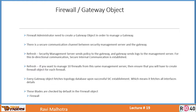Let us start. So the Firewall or the Gateway object. A firewall administrator needs to create a Gateway object in order to manage a Gateway. That's simple theory. In Checkpoint, before you can manage a Gateway, you need to create a Gateway object with the IP address, and once you create it, you need to establish SIC using an activation key. That's very important.